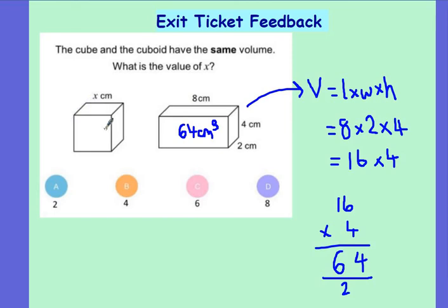I also know that for a cube, the length, the width and the height are all going to be the same. So the volume of this cube is going to be x times x times x. So I need a value of x that when I multiply it by itself 3 times gives me 64.